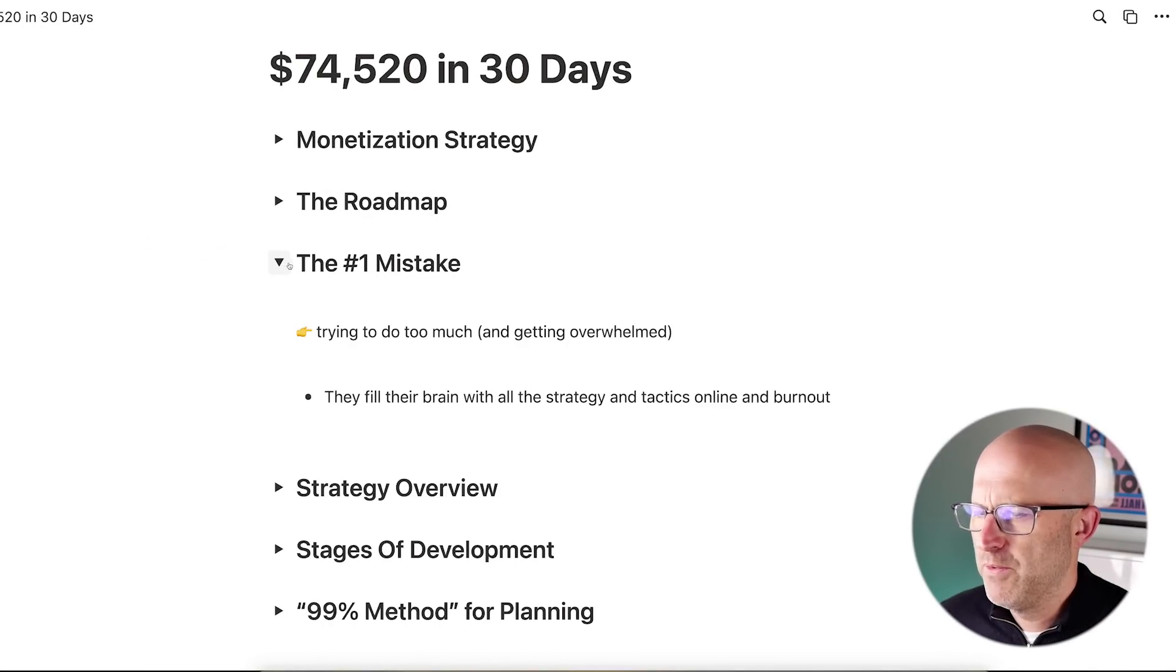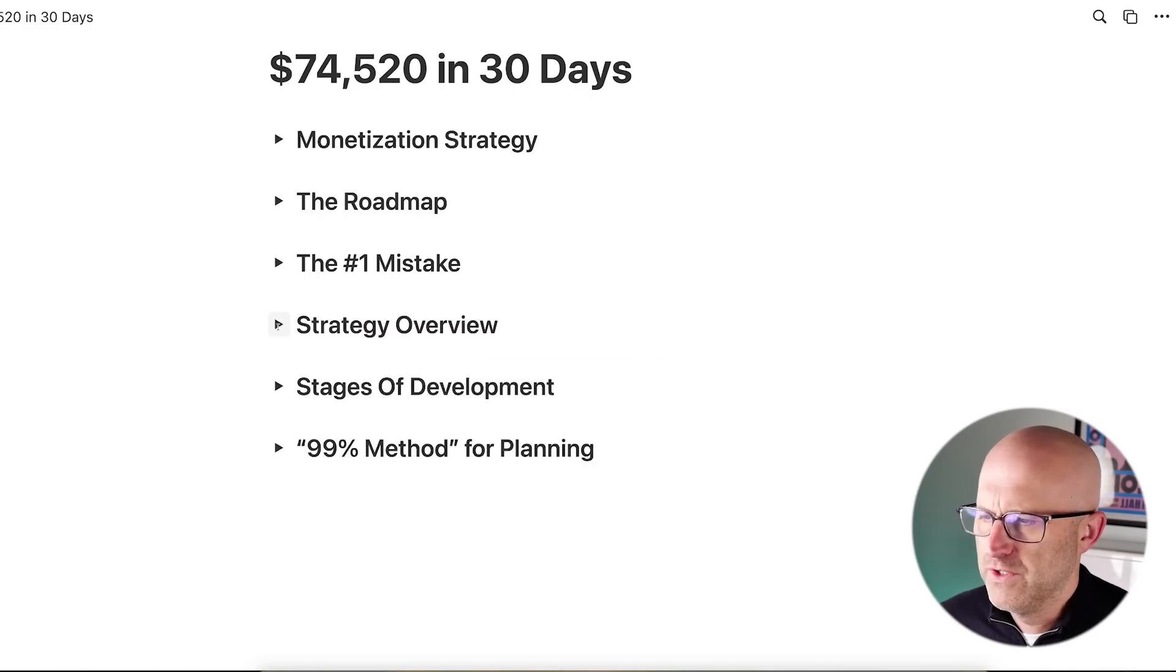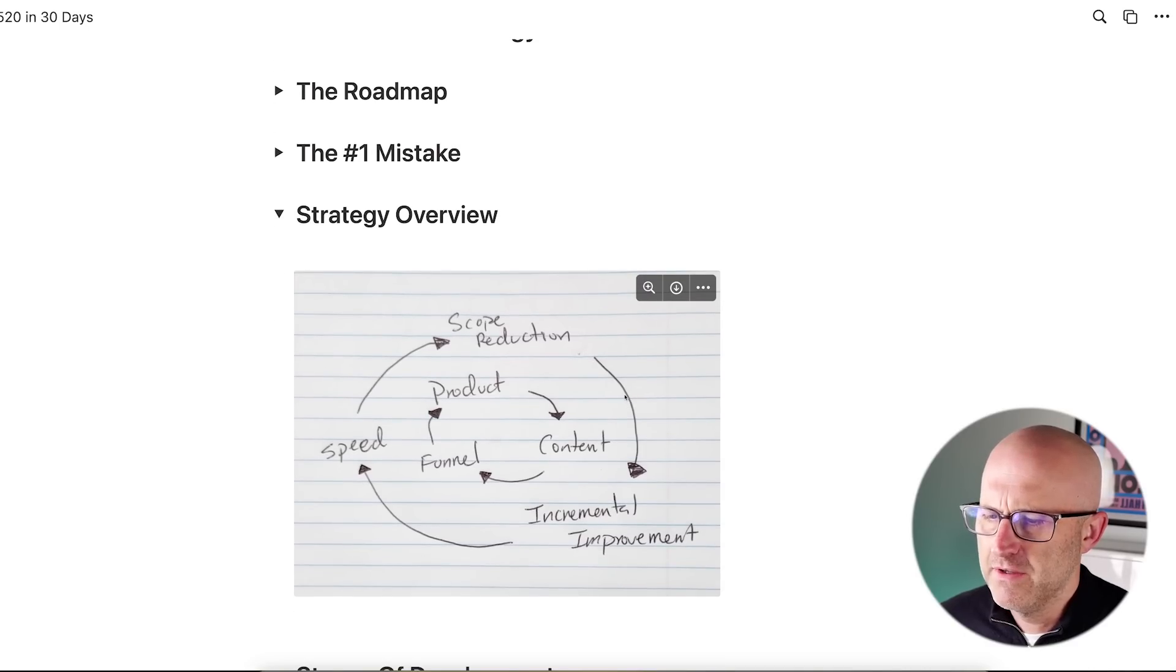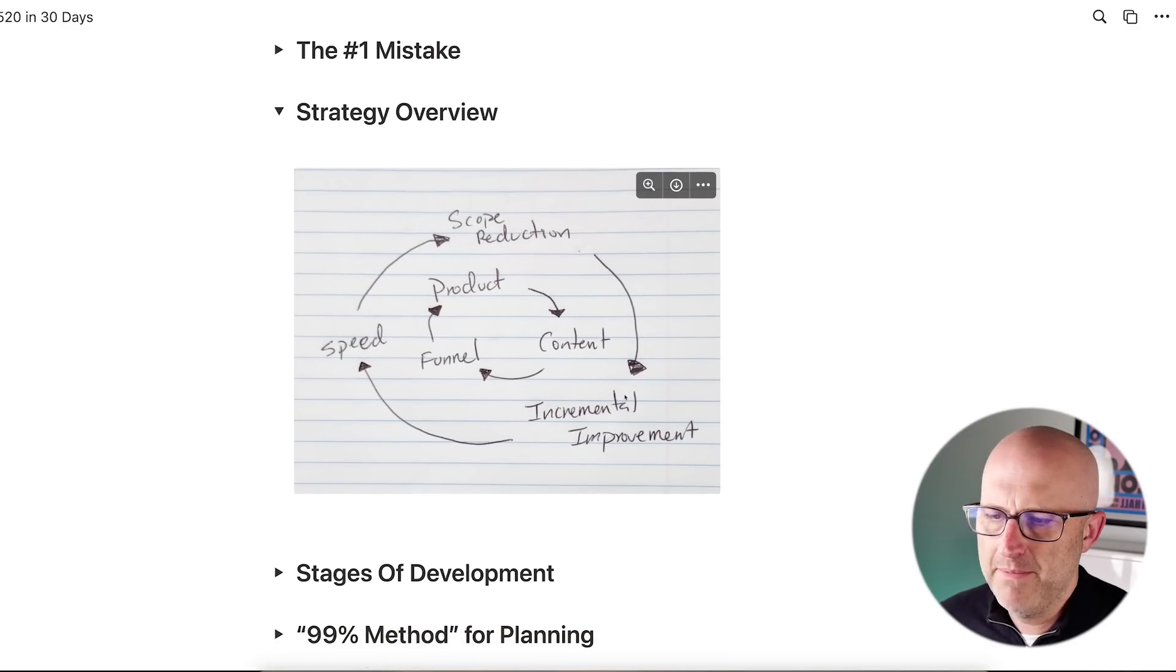Now, the first mistake that I see most people making right now is just trying to do too much and getting overwhelmed as they try to build out their AI automation business. They're really filling their brain with all the strategy and tactics online and burning out. So this is the same simple strategy that I use to build my business, and I'm going to go through it here with you today.